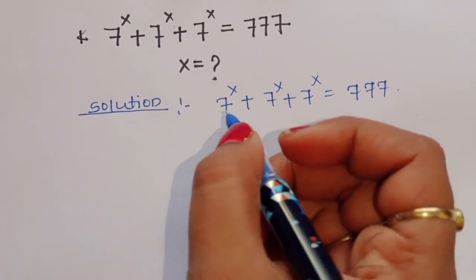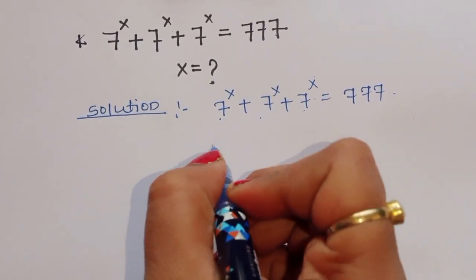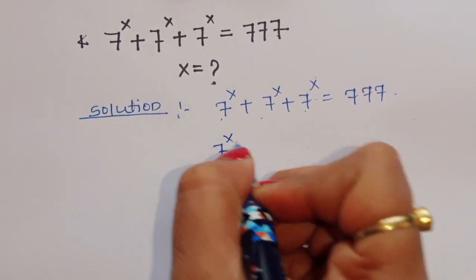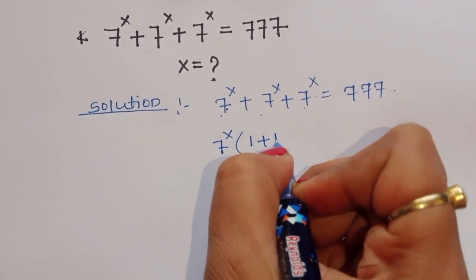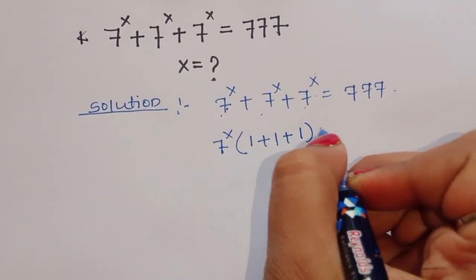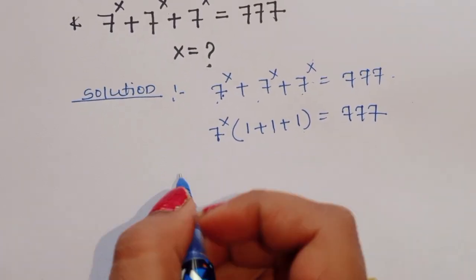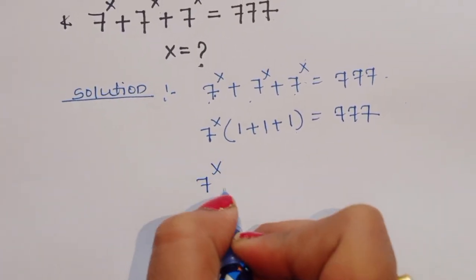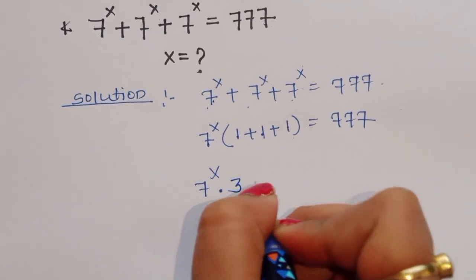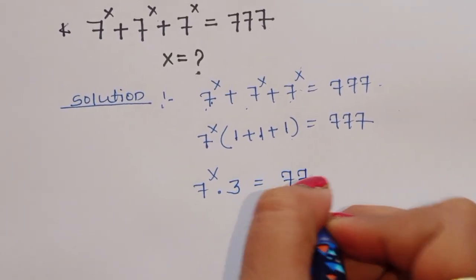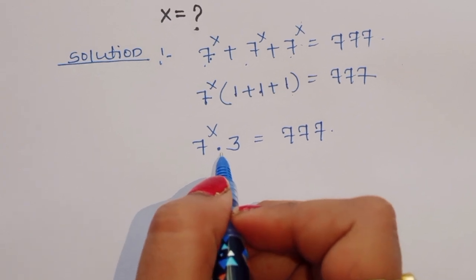We can take common because we have 7 power x, 7 power x, 7 power x. So we take out 7 power x as a common factor, leaving 1 plus 1 plus 1, which equals 777.